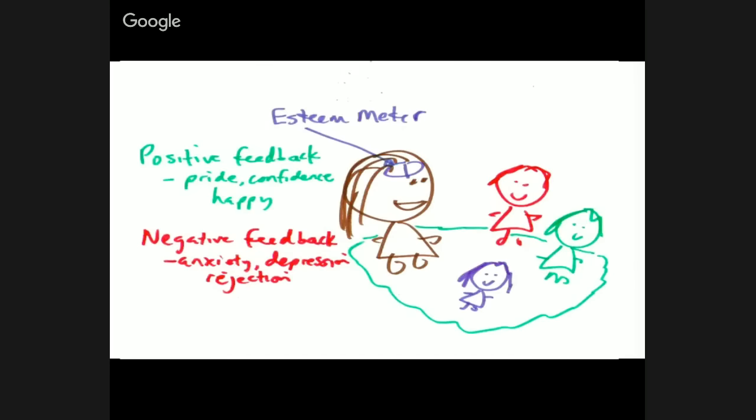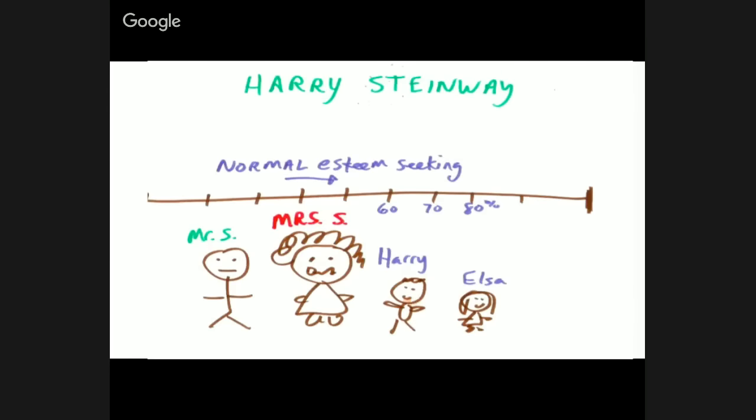So here's our gal inside the guano ring with her friends. When she gets positive esteem signals from them, it causes us to feel happy and confident and even feel proud. If we get negative feedback, like they're thinking about kicking us out of the guano ring, then it will cause us to feel depressed, to feel rejected, or to feel anxiety. So essentially, happiness is largely being guided by our esteem meter and its sensitivity to the feedback from other people.